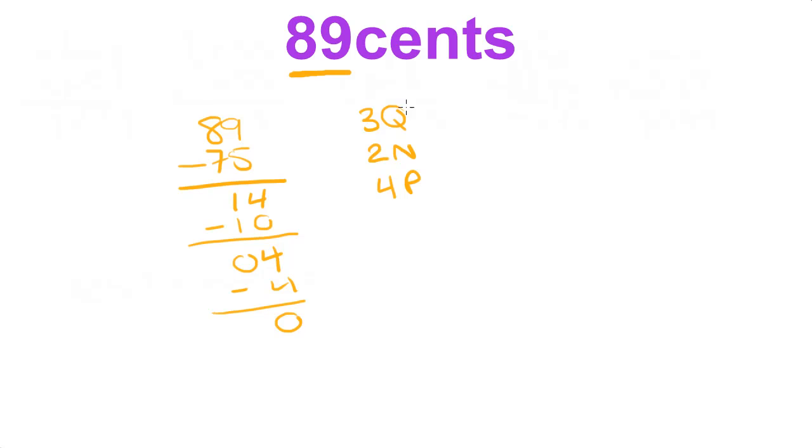So you can make 89 cents by having 3 quarters, 2 nickels, 4 pennies. Or, let's say you can either convert this to 1 dime.